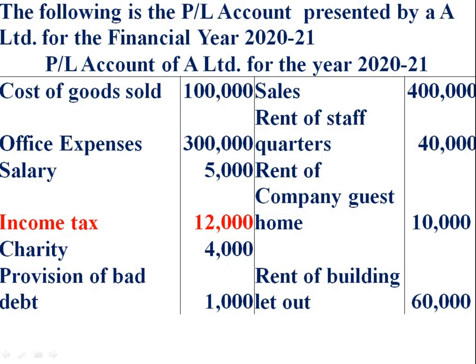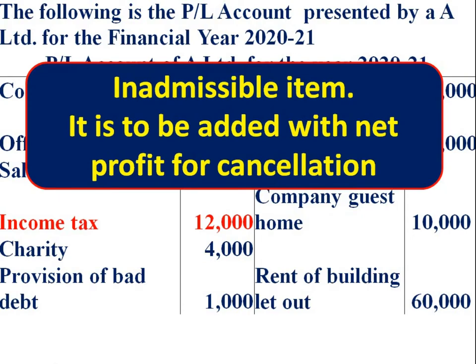Income tax — this is an inadmissible item. The amount of income tax should not be debited in the P&L account. Since income tax is an inadmissible item and it is debited in the P&L account, we have to cancel it by adding it back to the net profit.